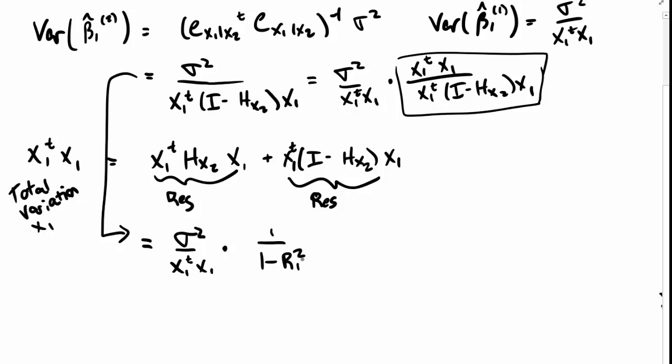And then I'm writing R1 squared just to remind myself that this isn't the same as the R squared when treating Y as the outcome. R1 squared is the R squared value treating X1 as the outcome and X2 as the predictor.